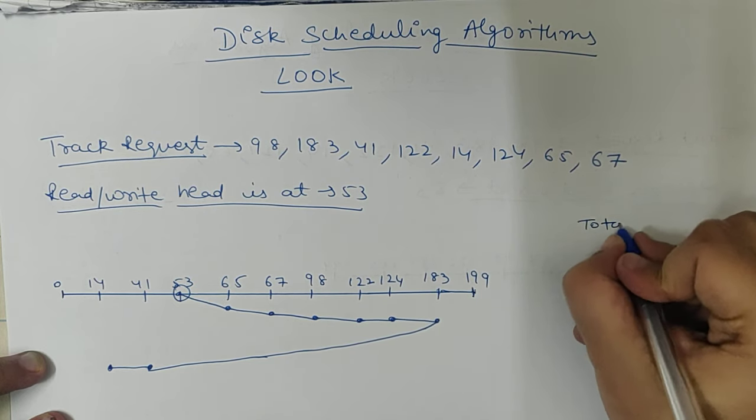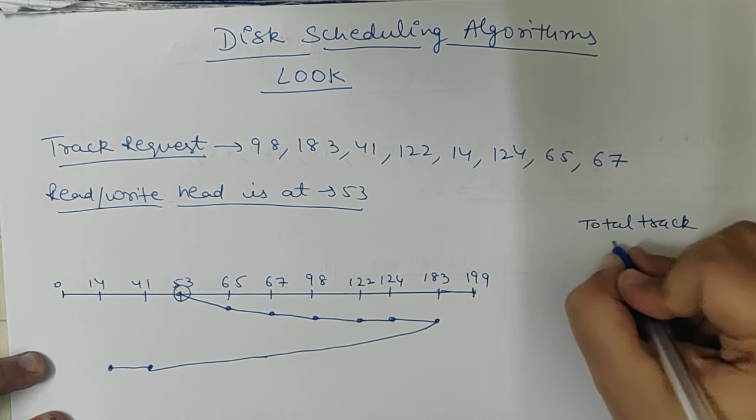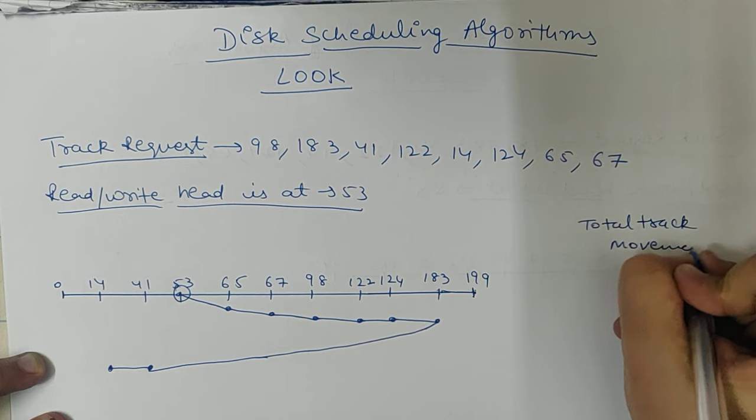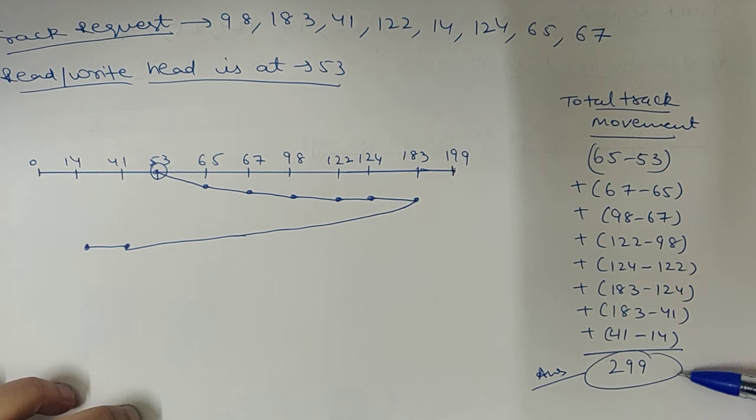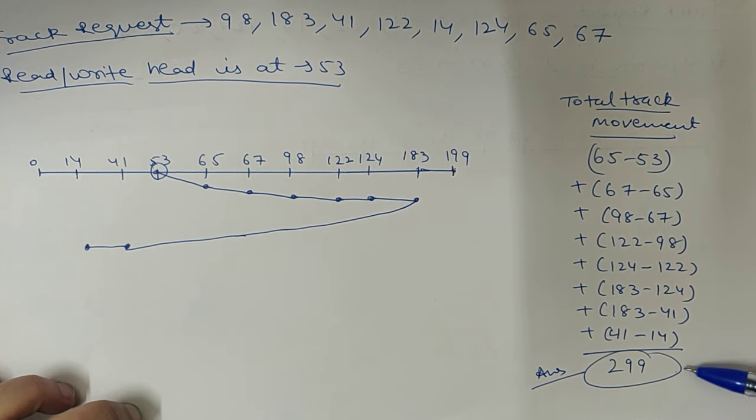So again we have to find out the total track movement. The total track movement is 299. This is the answer.